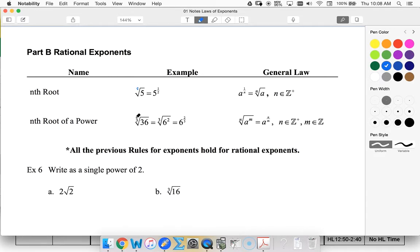We also have the nth root of a power. So the cube root of 36 is the same as the cube root of six squared. So we know that the three is really six squared to the one-third. And from our exponent rules, we know these become a product. So we have six to the two-thirds.